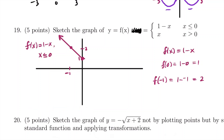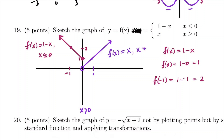For the right piece (x > 0): plug in 0 to get f = 0, but since it's strictly greater than zero, we keep an open dot at (0, 0). Plug in 1: f(1) = 1. So the right piece is the line y = x, passing through (1, 1) with an open dot at the origin. Together, these two pieces form the piecewise function.